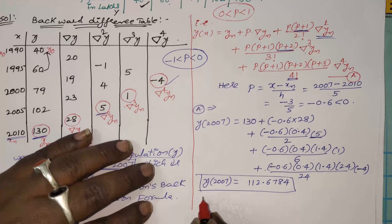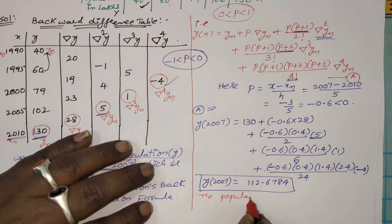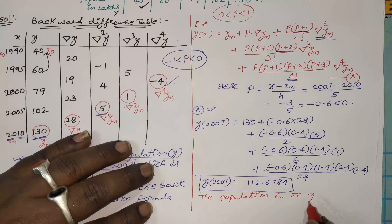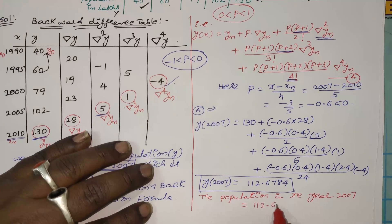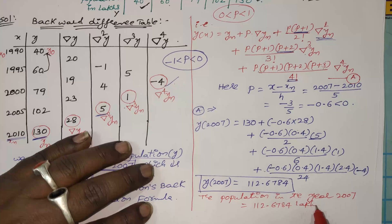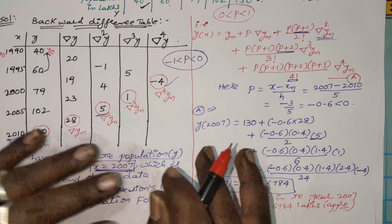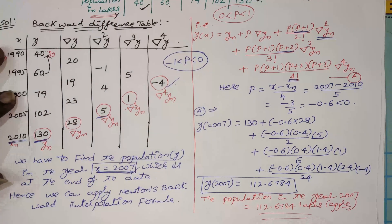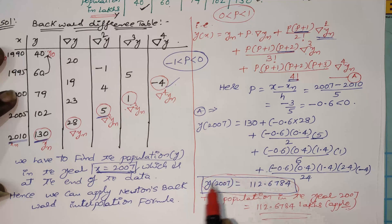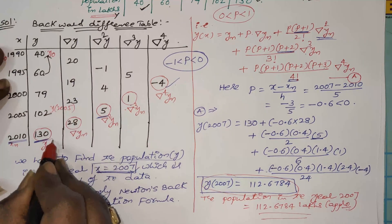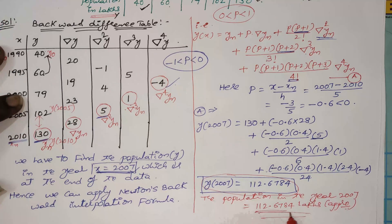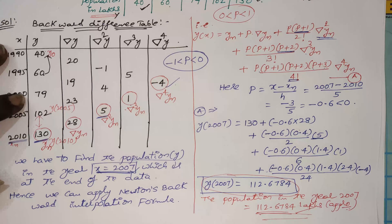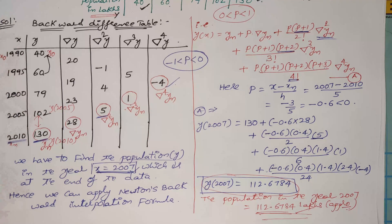You should write the conclusion also. The population in the year 2007 in that particular given town is equal to 112.6784 lakhs approximately, since the population is given in lakhs. In this way we can solve the problem. One more important check: y(2007) should lie between y(2005) = 102 and y(2010) = 130. Our answer 112.6784 lies in that range, so the answer is correct. You should always verify in this way in your examinations. Thank you very much.